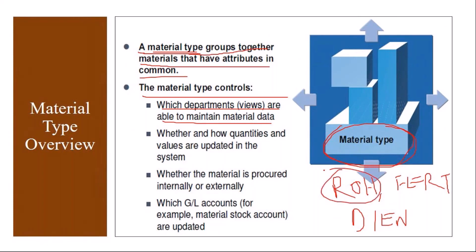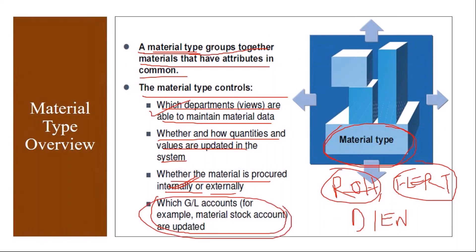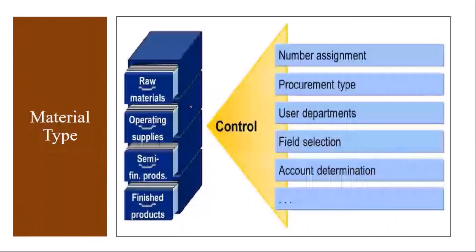The material type controls which departments are able to maintain data. For example, for raw materials, sales views are not required since you only purchase them. For finished products, the purchasing view is not required since you don't purchase them. The material type also determines whether quantities and values are updated in the system, and whether the material is procured internally or externally.